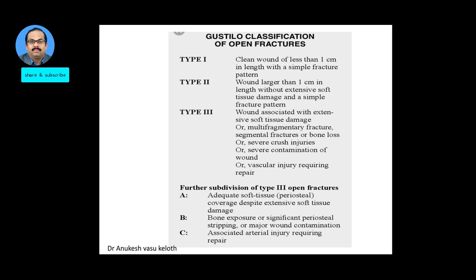Type 2 means the lacerated wound is more than 1 centimeter, it is clean or minimally contaminated with mild to moderate soft tissue injury. Type 3 can be any wound size but there is extensive soft tissue damage, and may include multi-fragmentary fractures, segmental fractures, bone loss, severe crush injury, severe wound contamination, or a vascular injury. Type 3 is further subdivided: 3A has adequate soft tissue to cover the bone; 3B has bone exposure or significant periosteal stripping; and 3C has an associated arterial injury.